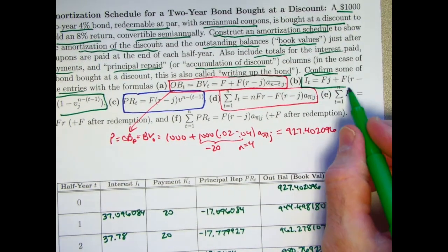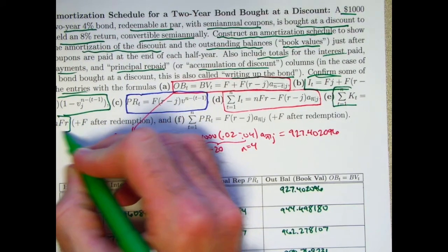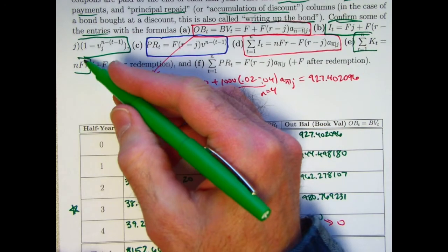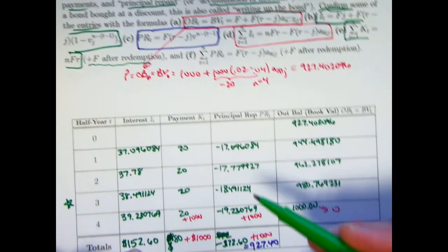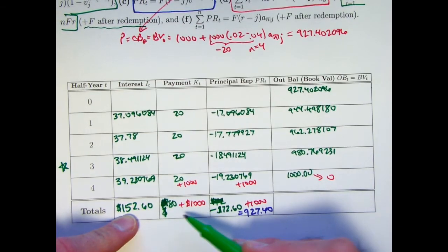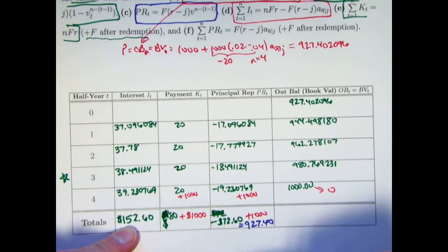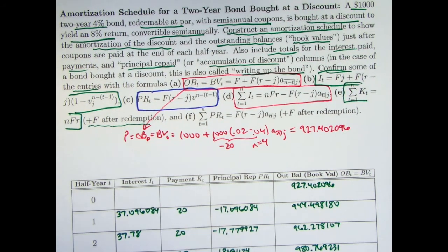Sum of all the payments is next. Sum of all the coupons is 80. Then I also said, plus after redemption, adding on the extra thousand. So you get 80 plus a thousand is a thousand and 80. That's pretty easy.